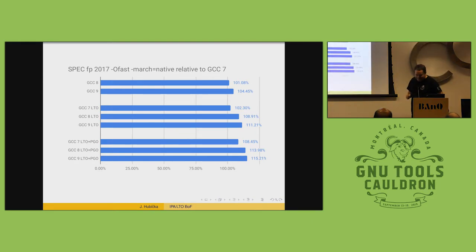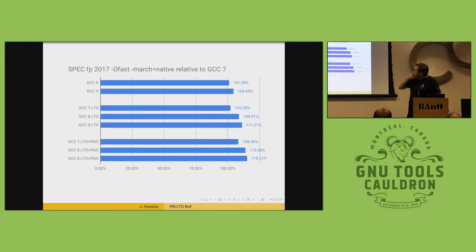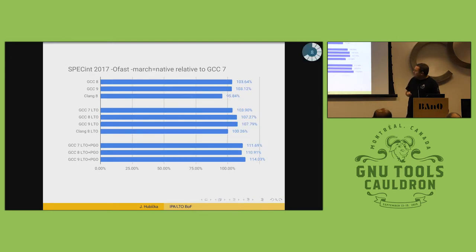Combined LTO and PGO give something like 10% performance improvement together. I don't have PGO numbers separately, but they are similar to the LTO ones.